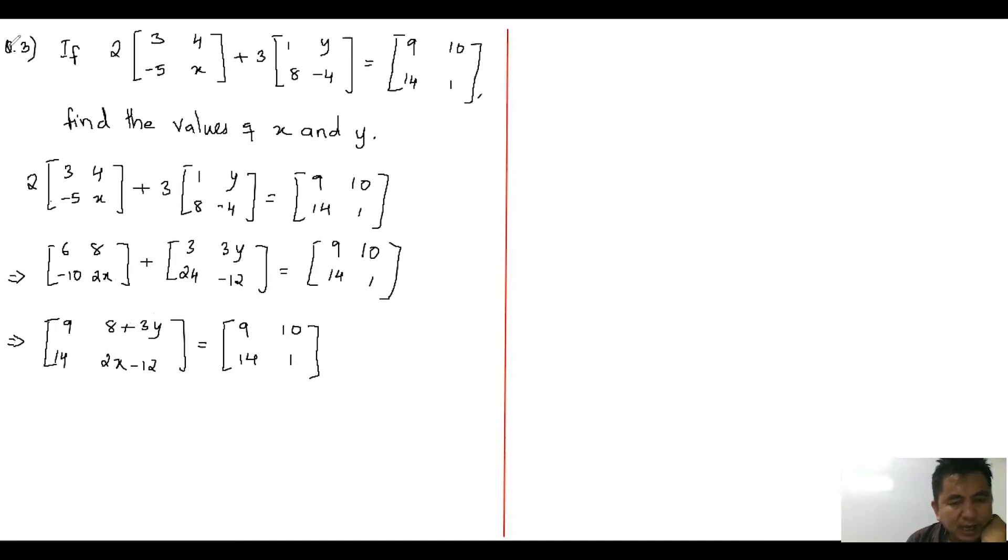Nine, fourteen. Now let me find this one. Since it is an equal matrix, eight plus three y is equivalent to ten. The other one, 2x minus twelve is equal to one.